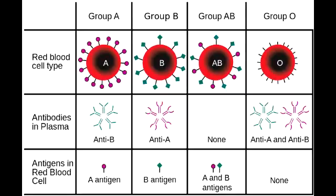What are all the things that can occur if there is an incompatible blood transfusion? In case of incompatible blood transfusion, this can cause an immunologic response, hemolysis, renal failure, shock, and even death.